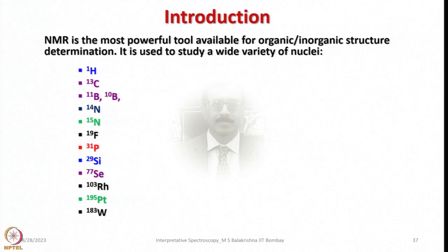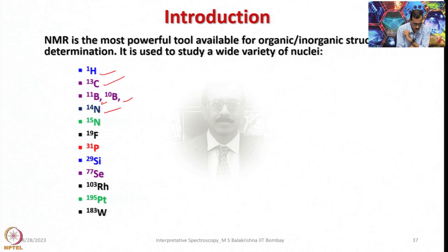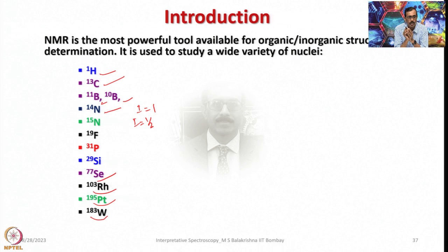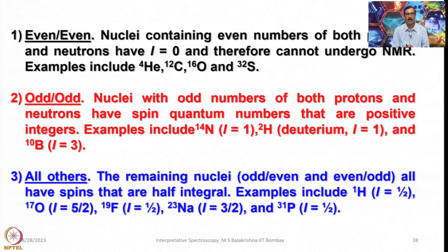NMR is used to study a wide variety of nuclei: ¹H, ¹³C, ¹¹B, and ¹⁰B. ¹¹B has about 80% natural abundance, the remaining being ¹⁰B; ¹⁰B has nuclear spin I = 3 whereas ¹¹B has I = 3/2. Also ¹⁴N has I = 1, ¹⁵N has I = 1/2, and ¹⁹F, ³¹P, ²⁹Si, ¹⁰³Rh, ¹⁹⁵Pt, and ¹⁸³W are all studied. However, we have some selectivity — not all elements in the periodic table have nuclei which can be analyzed through NMR.